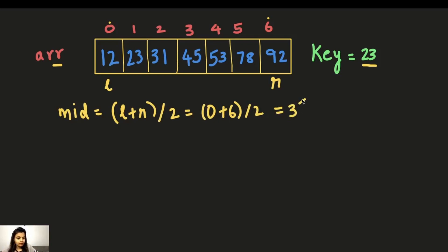So now we have found 3 as our middle element. So the third index is mid. Middle element has value 45. Now what do we do? We see if the key is equal to the middle element in our array, so arr of mid. Our key is 23 and arr of mid is 45. So is 23 equal to 45? No, it's not.